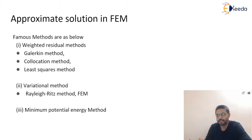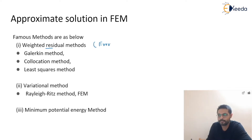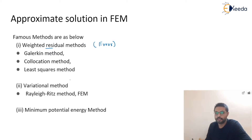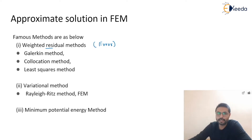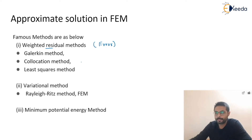In the weighted residual method there are various approaches like the Galerkin approach, collocation approach, and least square approach. By these approaches, what we are doing is multiplying the residue — that means the error — with some weighted function and making it zero. In variational method and minimum potential energy method the approaches are different, which we will see in detail in upcoming lectures. Right now we are focusing on what is the weighted residual method.